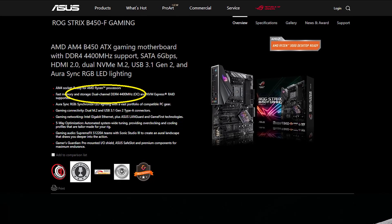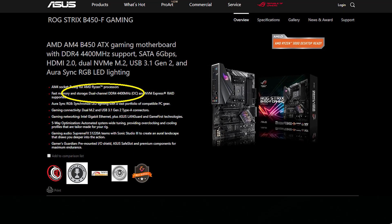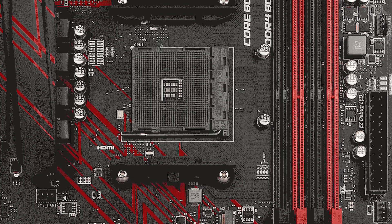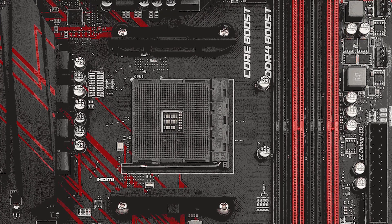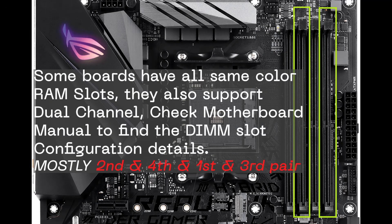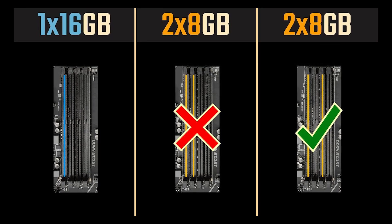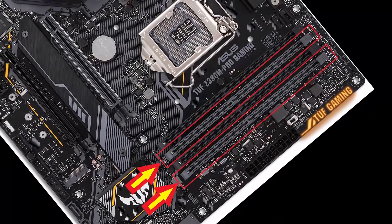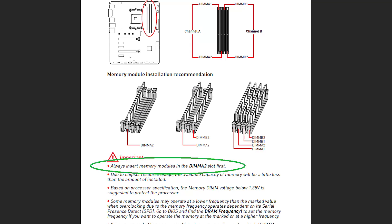For dual channel configuration, on a motherboard with 4 RAM slots, two slots are one color (e.g., light grey or orange) and two slots are another color (e.g., dark black). These color pairs support dual channel. Place your two RAM sticks in matching-color slots. The slots are labeled A1, A2, B1, B2 — check your motherboard manual.